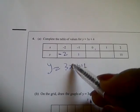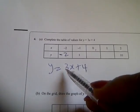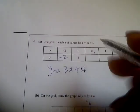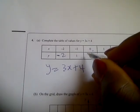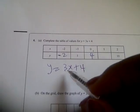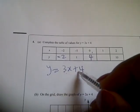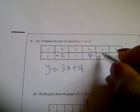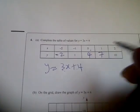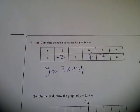When x is 0, you have 0 times 3 is 0, and 0 plus 4 is 4, so y will be 4. When x is 1, you have 3 times 1 is 3, and 3 plus 4 is 7, so y will be 7. That completes the table of values for question 4.